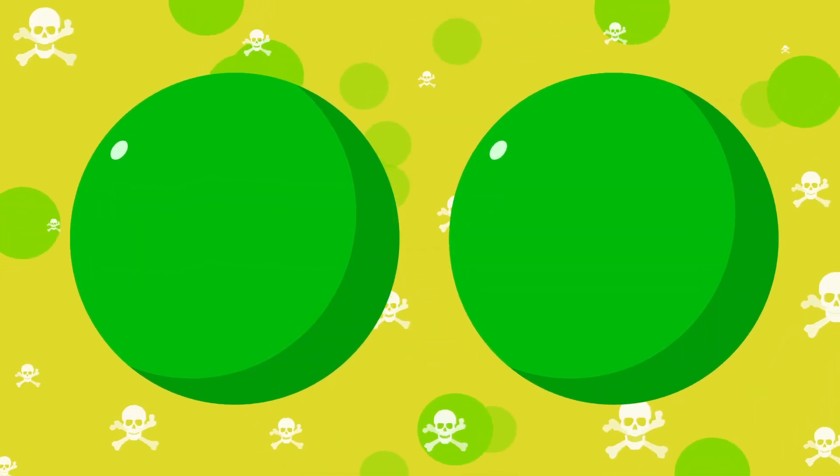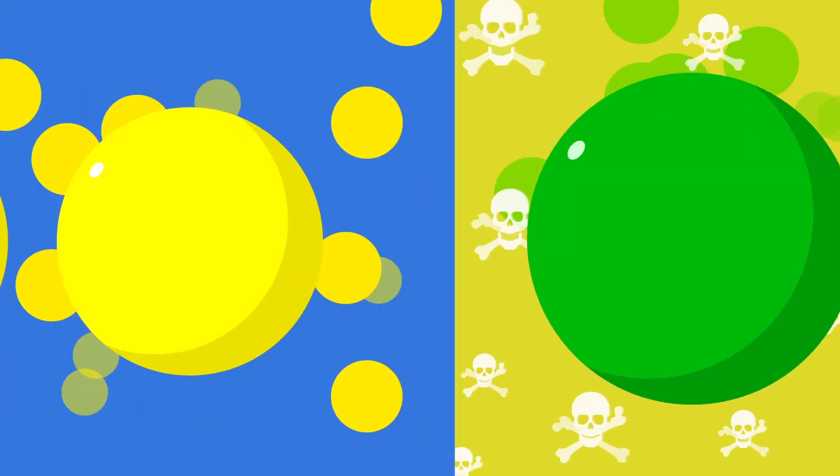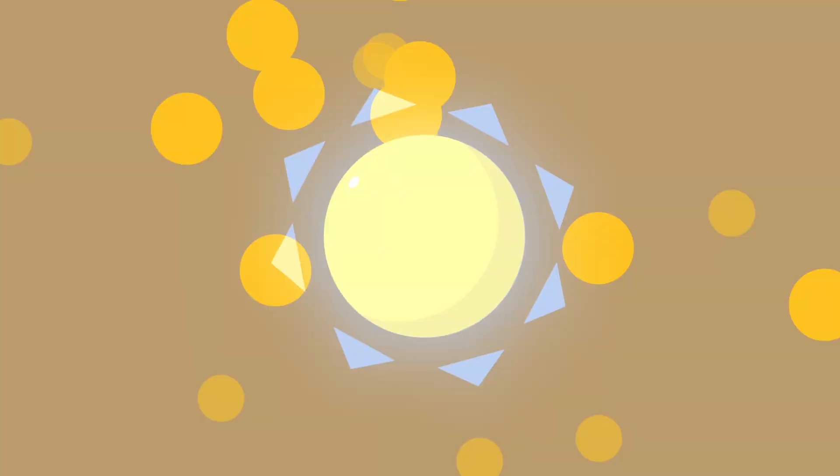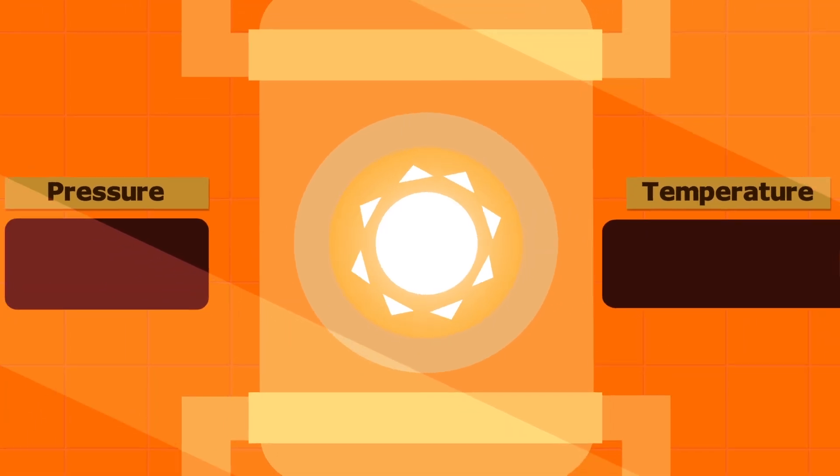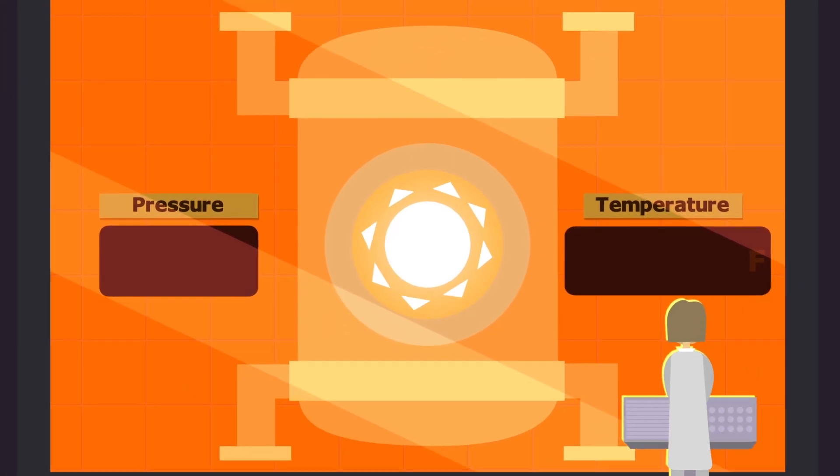Nuclear fusion instead would see atoms join together to create a lot more energy than an efficient reaction. This is the same process that powers the sun. Scientists are trying to effectively create a small star on Earth that can recreate the same process.